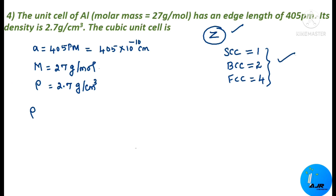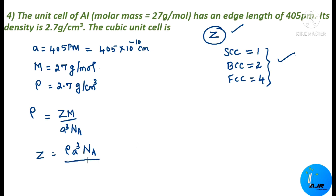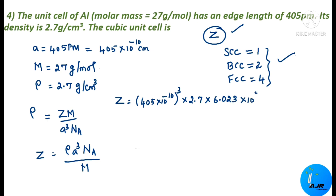From the density formula ρ = (Z × M) / (a³ × Nₐ), we rearrange to find Z: Z = (ρ × a³ × Nₐ) / M. Substituting: Z = (405 × 10⁻¹⁰)³ × 2.7 × 6.023 × 10²³ / 27. Simplifying gives Z = 4.